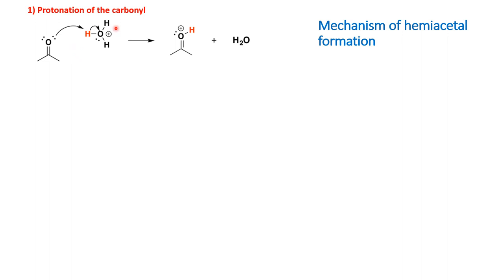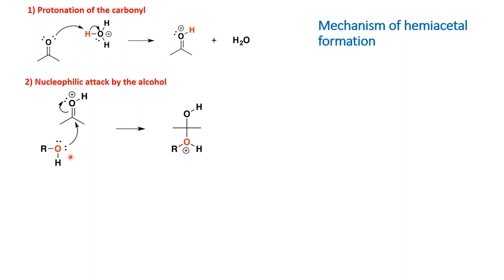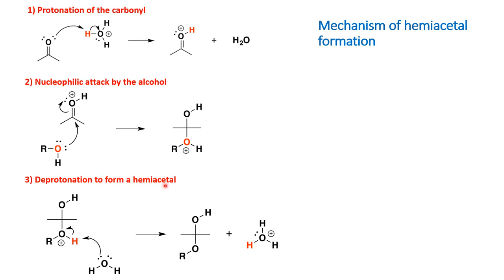The first step in the mechanism is protonation of the carbonyl group — the reaction happens in acidic medium. The second step is the attack of the alcohol: the oxygen lone pair attacks the carbonyl carbon, and as a result the oxygen becomes neutralized. The next step is deprotonation — the proton is abstracted out, the acid is regenerated, and what we have obtained is the hemiacetal.